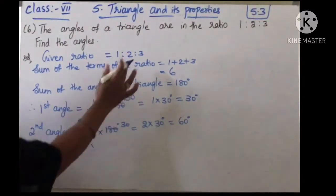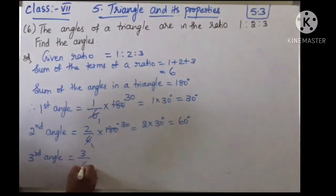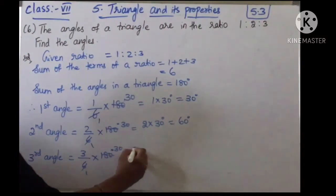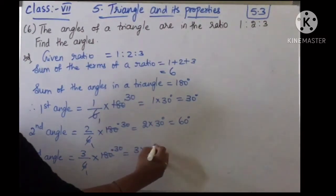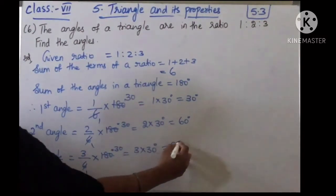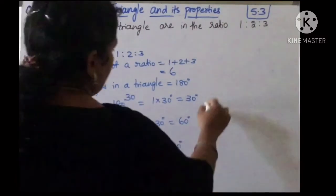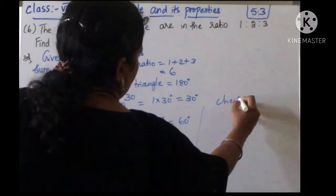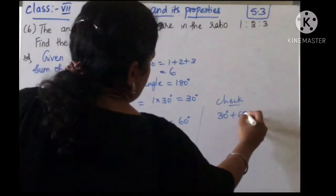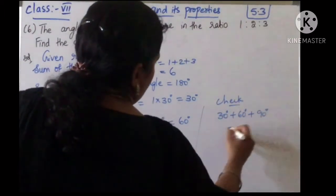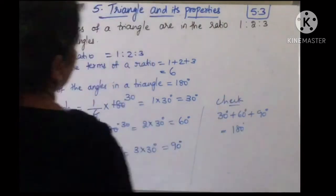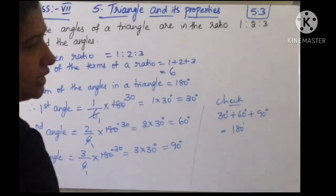For the third angle: 3/6 into 180 = 90 degrees. You can check: 30 plus 60 plus 90 equals 180 degrees. So the sum of the angles in a triangle is confirmed as 180 degrees.